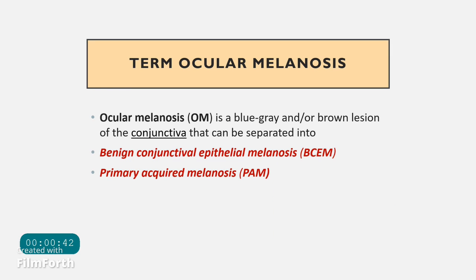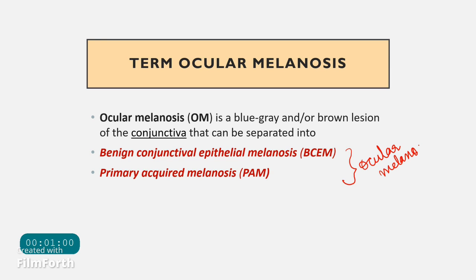The term ocular melanosis is used for two conditions: benign conjunctival epithelial melanosis and primary acquired melanosis. Together, they are referred to as ocular melanosis. It is very important to remember that the term melanosis applies to both of these conditions.